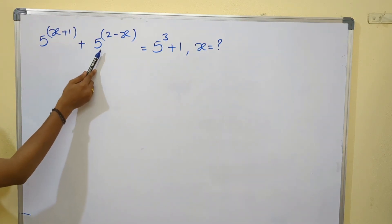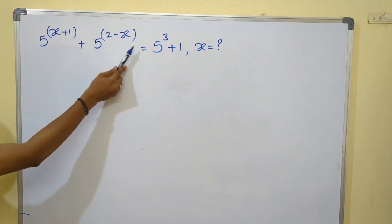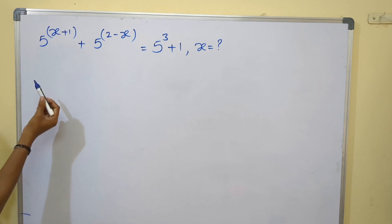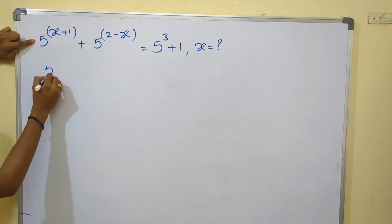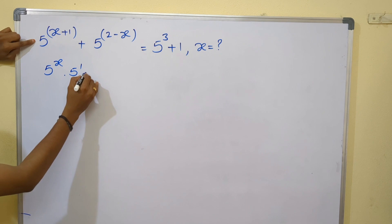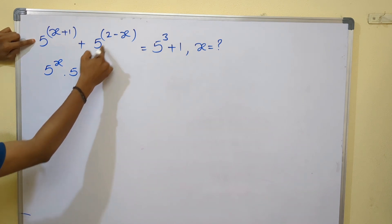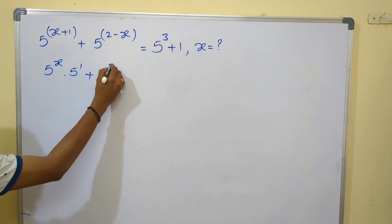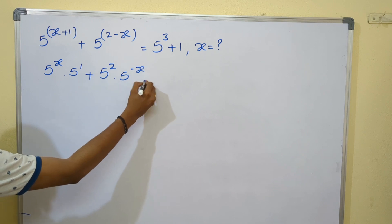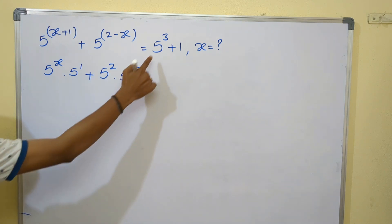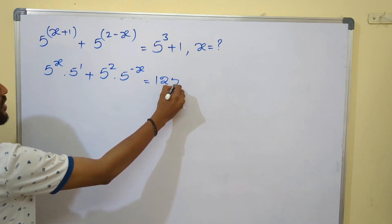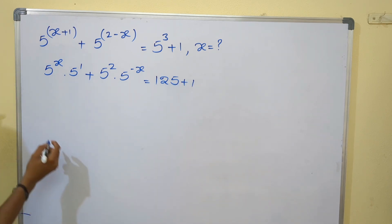Given: 5^(x+1) + 5^(2-x) = 5^3 + 1. Find the x value. 5^(x+1) can be written as 5^x · 5^1, and 5^(2-x) can also be written as 5^2 · 5^(-x), equals 5^3. Note that 5·5·5 is 125, plus 1.